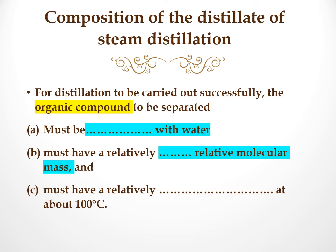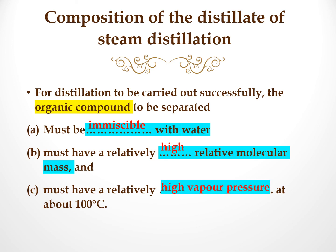For steam distillation to be carried out successfully, the organic compound to be separated must be immiscible with water, must have a relatively high relative molecular mass, and must have a relatively high vapour pressure at about 100 degrees Celsius.